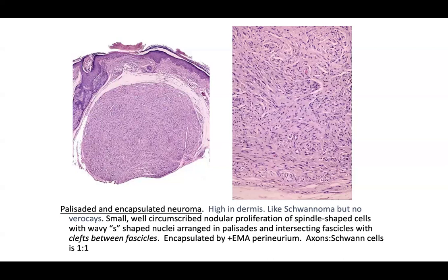Here it's hard to pick out Verocay bodies — the neural cells are in a haphazard mixture of random orientation, not forming nice palisading columns. The more haphazard arrangement plus location on the face are the most definitive ways to separate a schwannoma from a palisaded and encapsulated neuroma (PEN). They're usually small, well-circumscribed, nodular, with spindle-shaped cells with wavy S-shaped nuclei. Clefting between fascicles helps differentiate as well. An EMA stain shows encapsulation by EMA-positive perineural cells, and the axon-to-Schwann cell ratio is approximately 1:1.